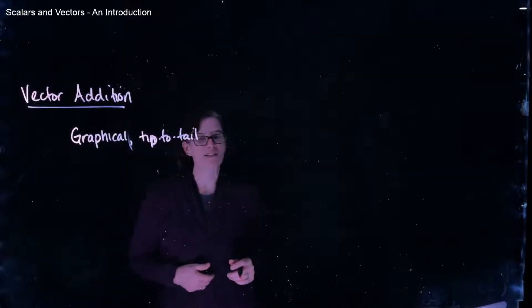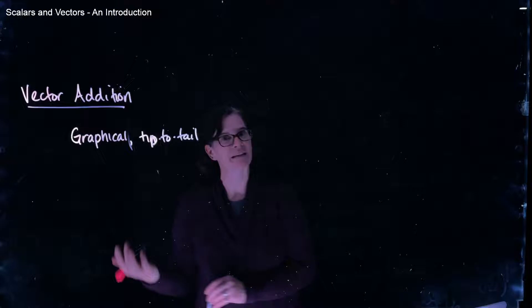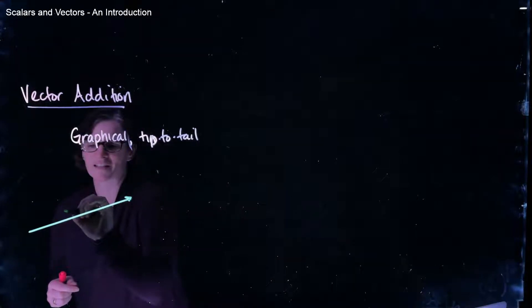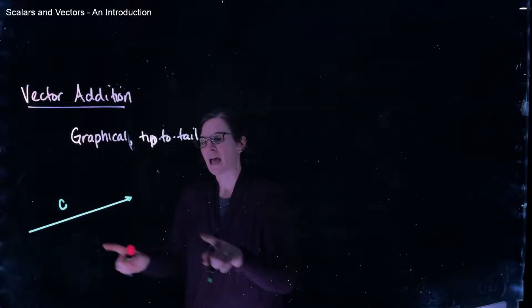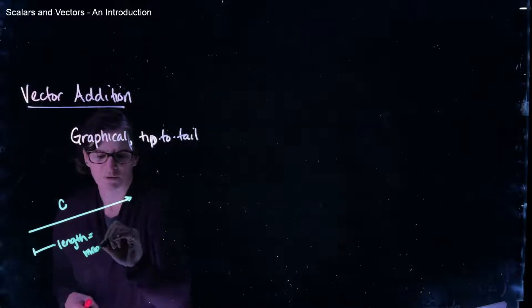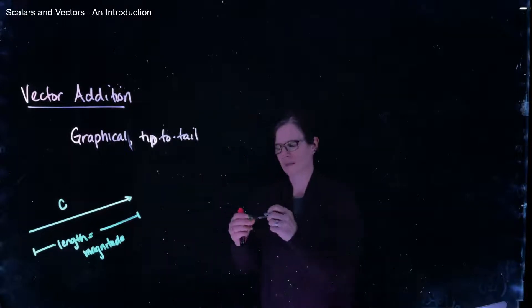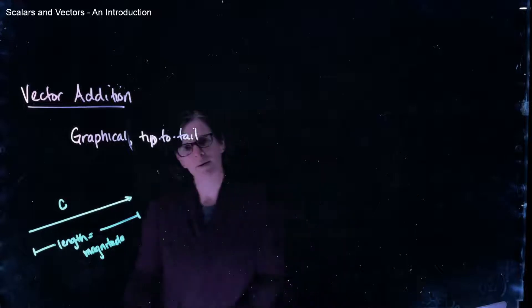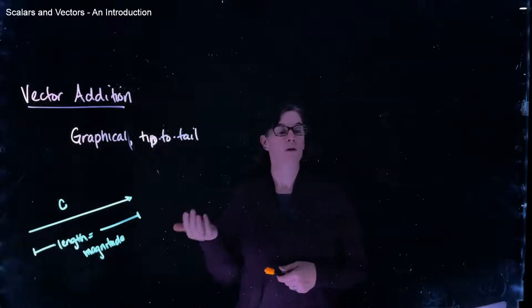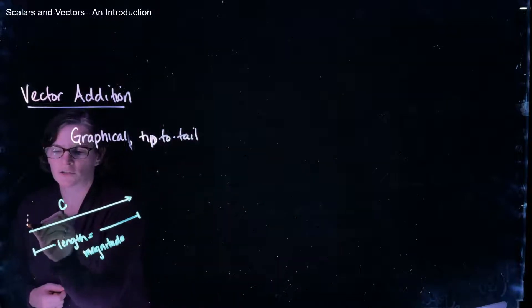There are two methods for vector addition. The first is the graphical method, also known as the tip-to-tail method. In order to do a graphical method for vector addition, we have to represent our vectors as a picture. Vectors - something that has both magnitude and direction - is best represented by an arrow. If I have this vector, we'll call it vector C, the length of vector C corresponds to its magnitude. So the length of my arrow represents the magnitude of that vector.